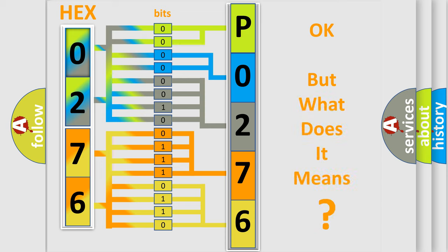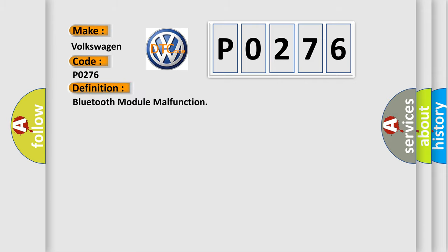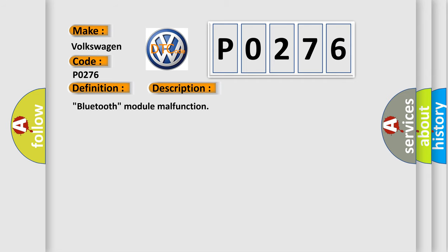The number itself does not make sense to us if we cannot assign information about what it actually expresses. So, what does the Diagnostic Trouble Code P0276 interpret specifically for Volkswagen car manufacturers? The basic definition is Bluetooth module malfunction. This diagnostic error occurs most often in these cases: Navigation receiver assembly.